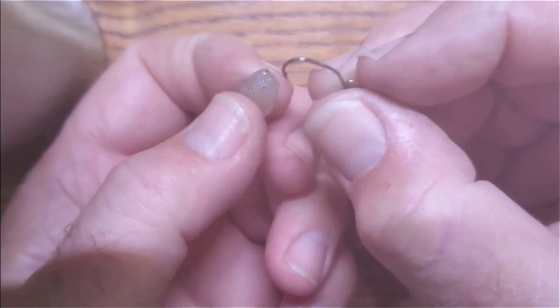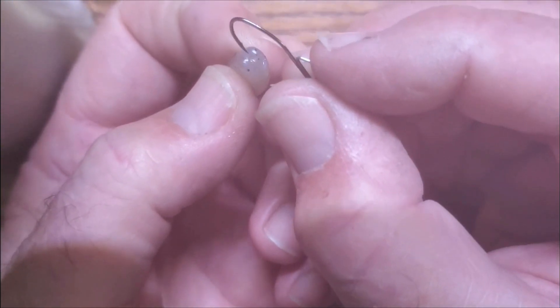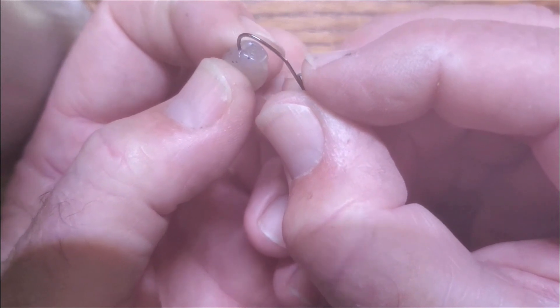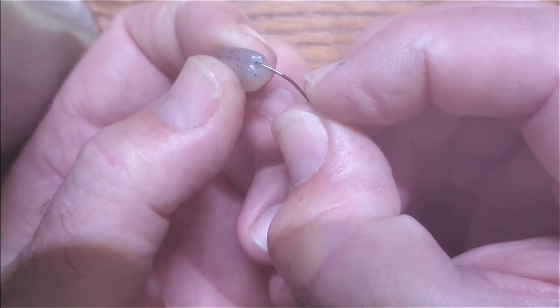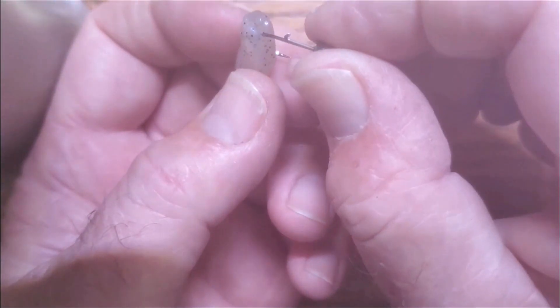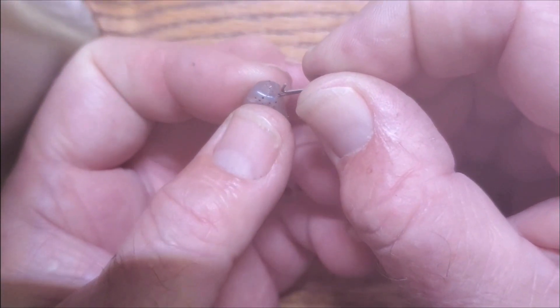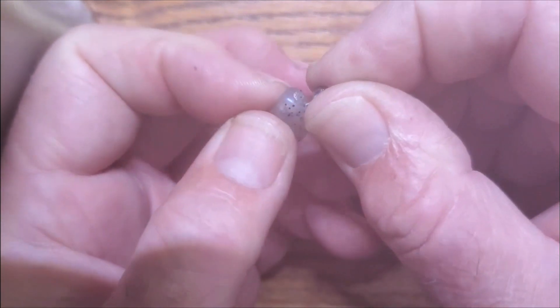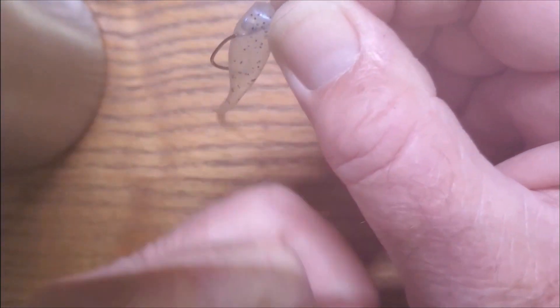Then we're going to take this Bobby Garland. We're going to start at the very top up there, come down about a quarter inch out the bottom, and then we're going to rotate this jig head around this way. Push it all the way through just like that.